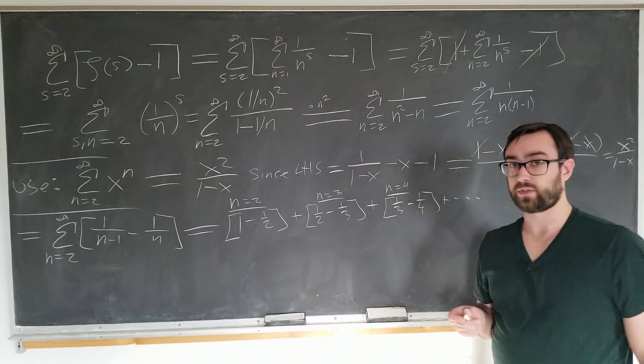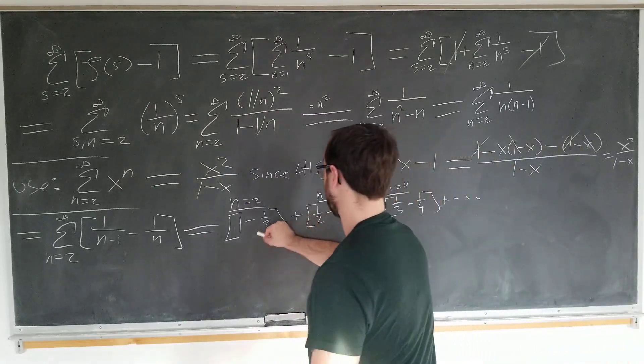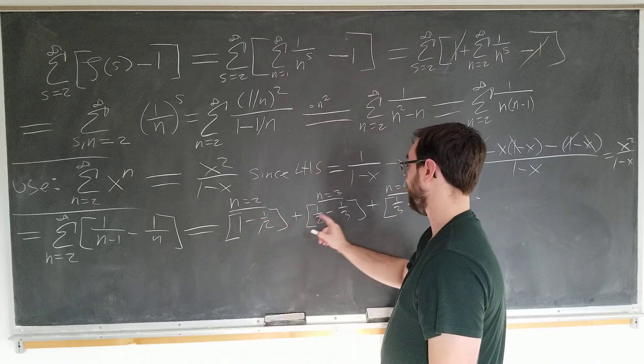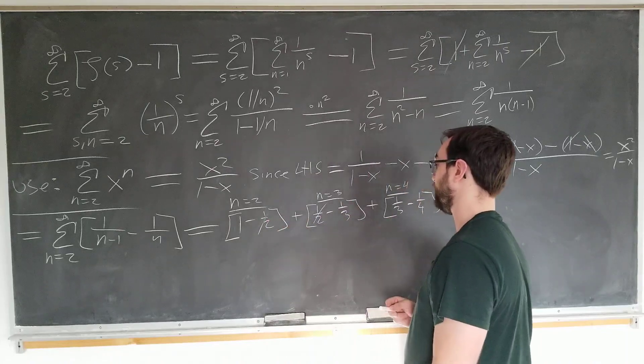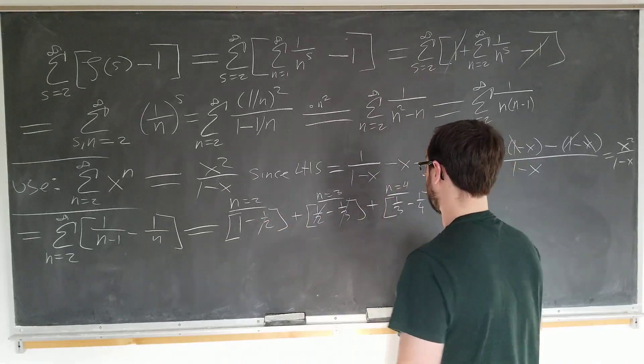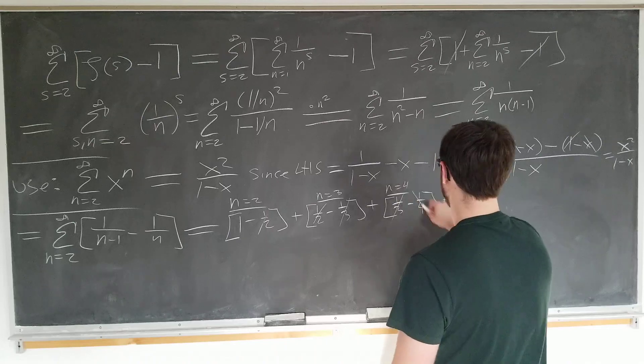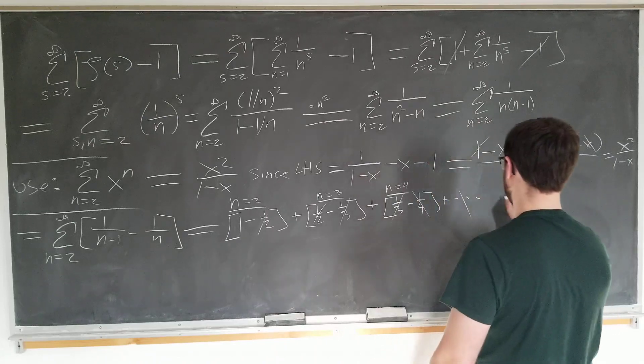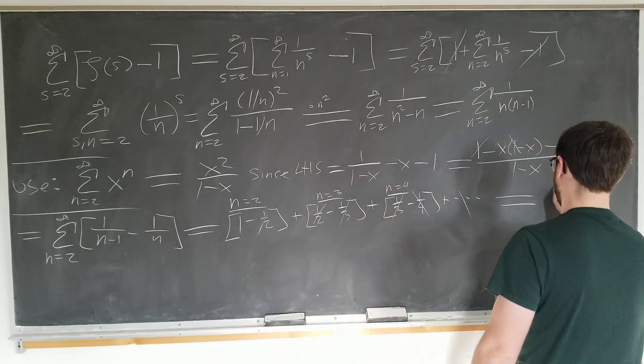This pattern will continue on indefinitely. And notice which terms cancel. We have the last term of the first term being cancelled with the first term of the next term, and the subsequent term being cancelled by that term. This pattern continues forever. So the sum is just simply 1.